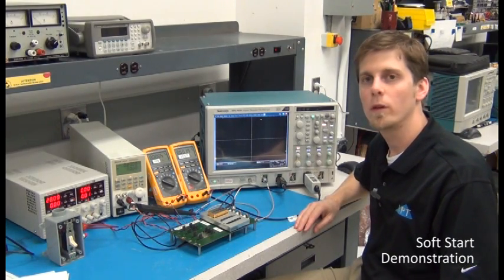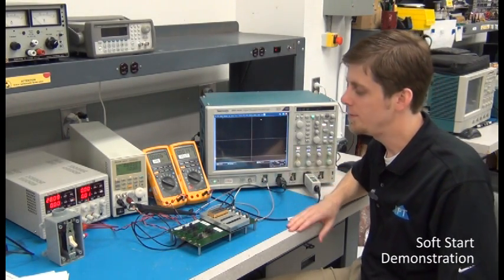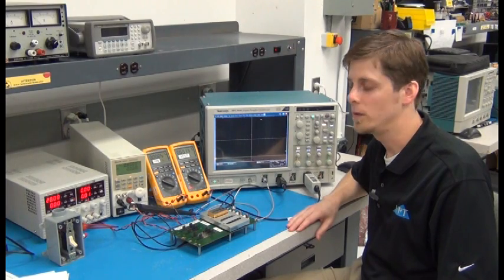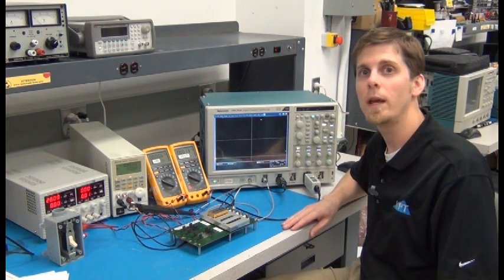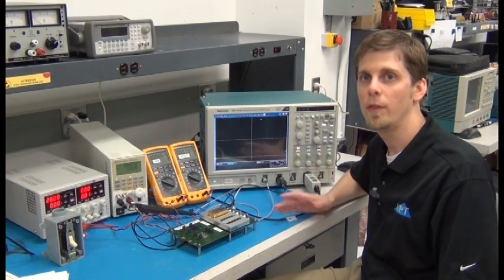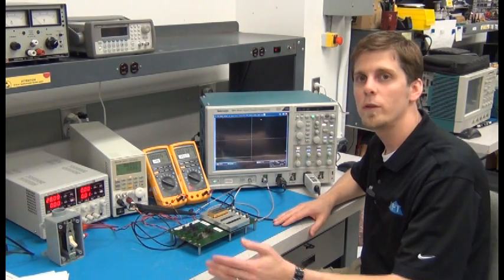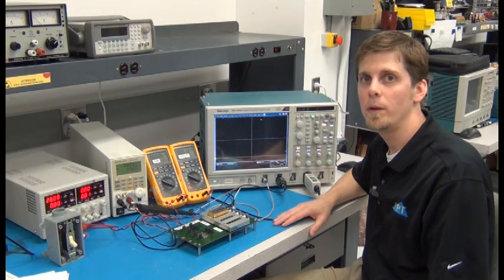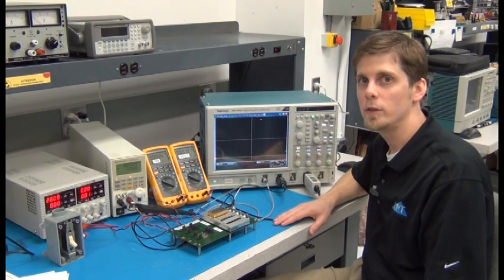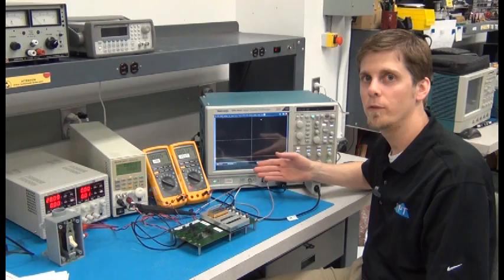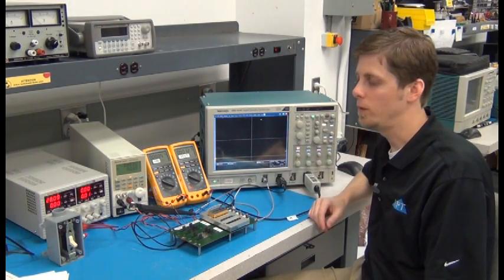For this demo, we're going to look at the soft start of the DVTR-2805 single in particular. This is a 28-volt input, 5-volt output converter at 30 watts, so the full load is 6 amps. What I'm going to do is apply the 28-volt input under different load conditions, and we can watch the output voltage soft start on the scope.